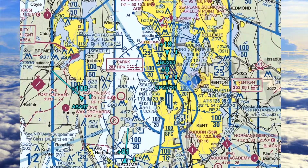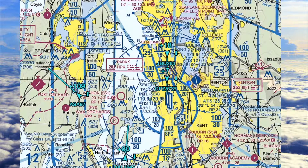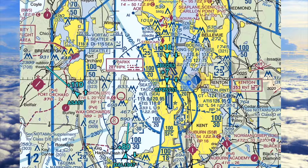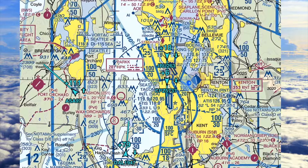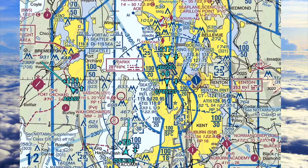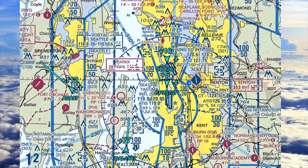Sometimes on the map when you're flying it will give you a traffic alert just behind you — like '12 o'clock, zero feet below.' That's pretty much your ghost. There's no traffic behind you that close — it's just the ADS-B receiver picking up itself. So don't be alarmed when you see that.